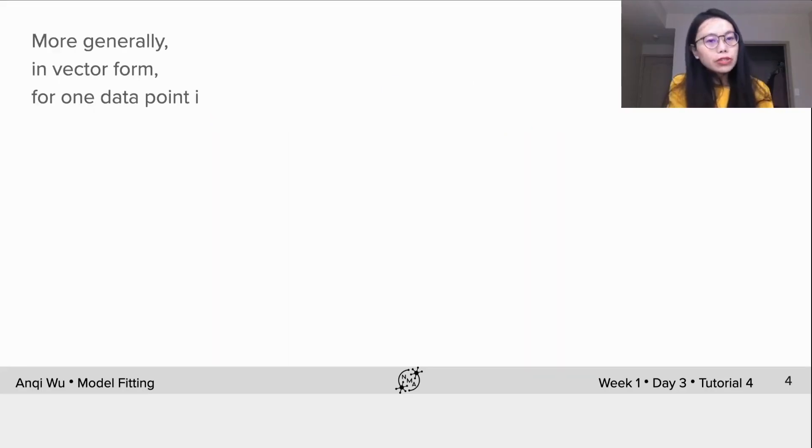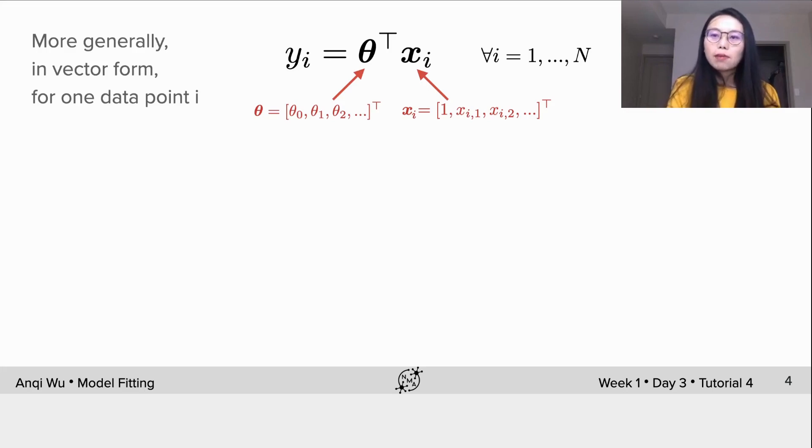More generally, we can write it in vector form for each data point i. Both the bold theta and bold xi are vectors. The elements in theta are the linear weights for each feature and intercept, and each element in vector xi corresponds to each input feature for this data point. i is from 1 to n.